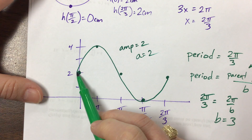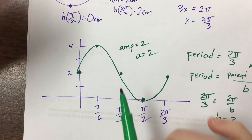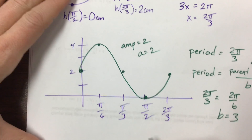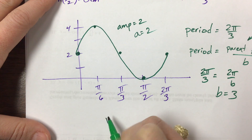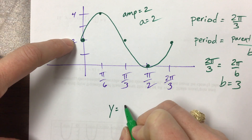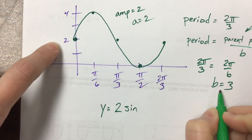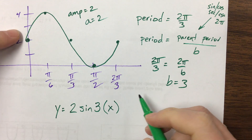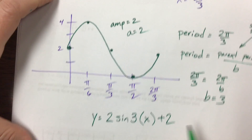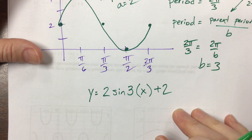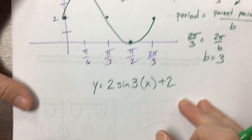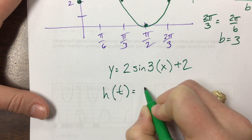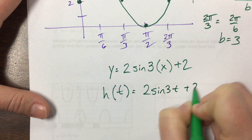Notice: this is sine, and I don't have to shift left or right, but I do have to shift up and down. My curve has an amplitude of 2, b value of 3 times t, and I had to shift up to this midline of +2. So the height as a function of time is equal to h(t) = 2sin(3t) + 2.